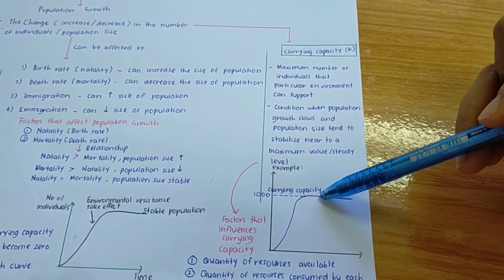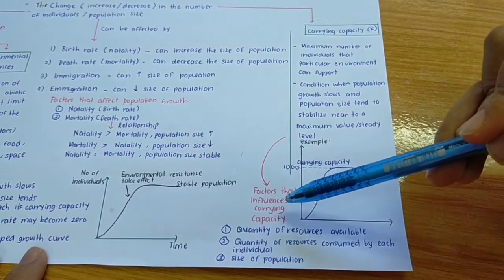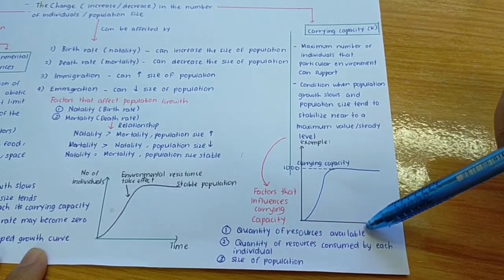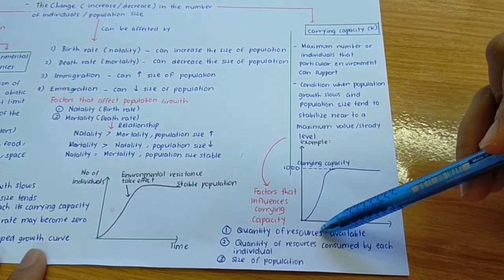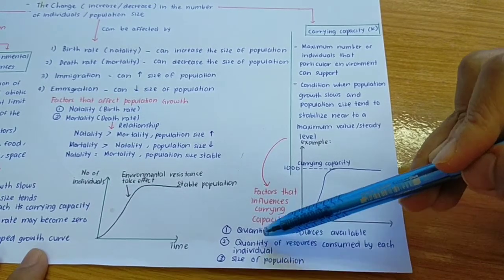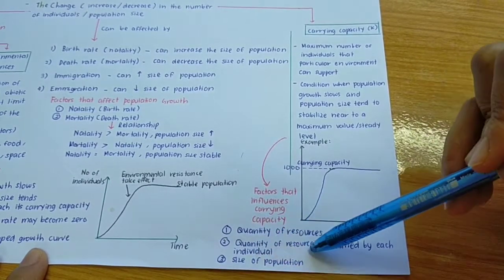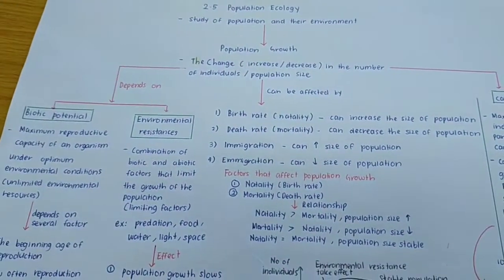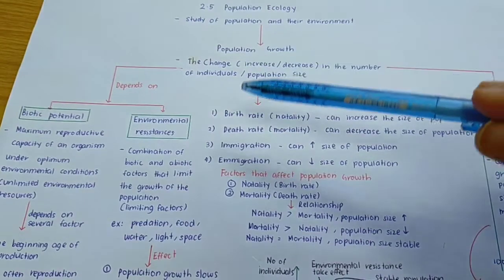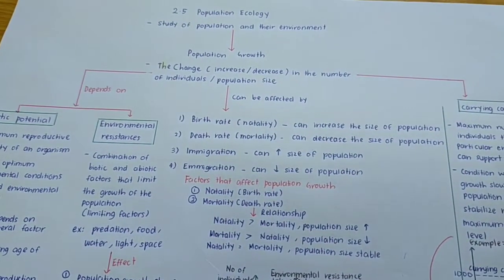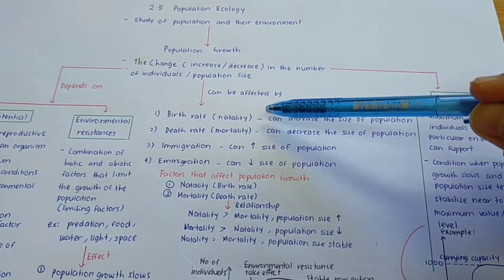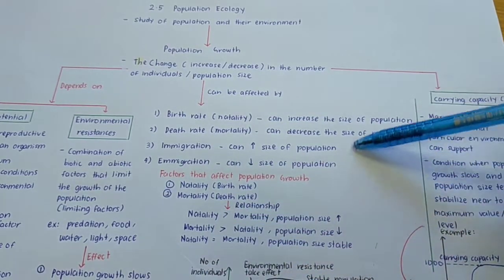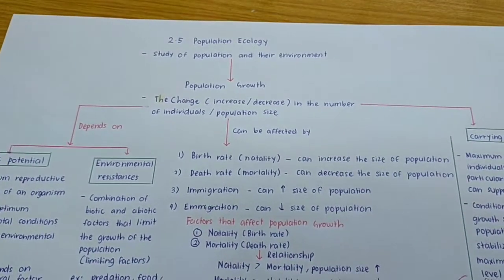The factors that influence carrying capacity are: the quantity of resources available, the quantity of resources consumed by each individual, and the size of the population. So to summarize, you need to know what biotic potential, environmental resistance, and carrying capacity are, as well as the factors that affect population growth and the relationships between them.